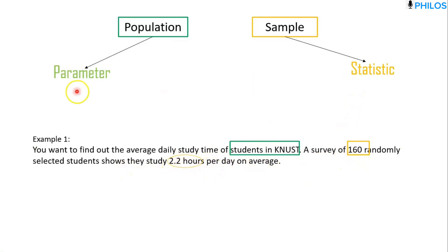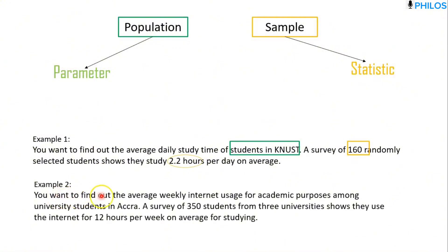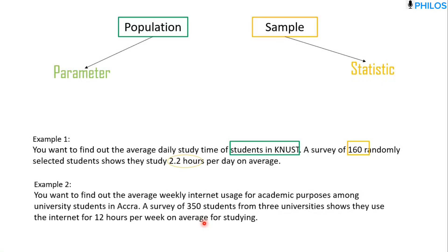Now let's take another example. Example two: you want to find out the average weekly internet usage for academic purposes among university students in Accra. A survey of 350 students from three universities in Accra shows they use the internet for 12 hours per week on average for studying. Let's identify the population, the sample, and the parameter or statistic.